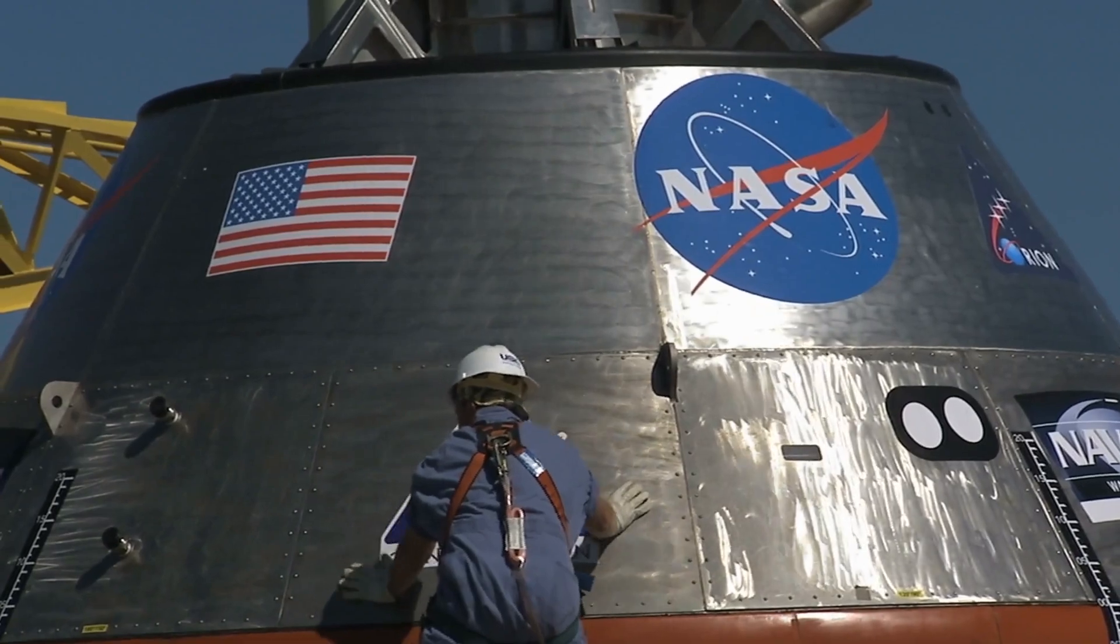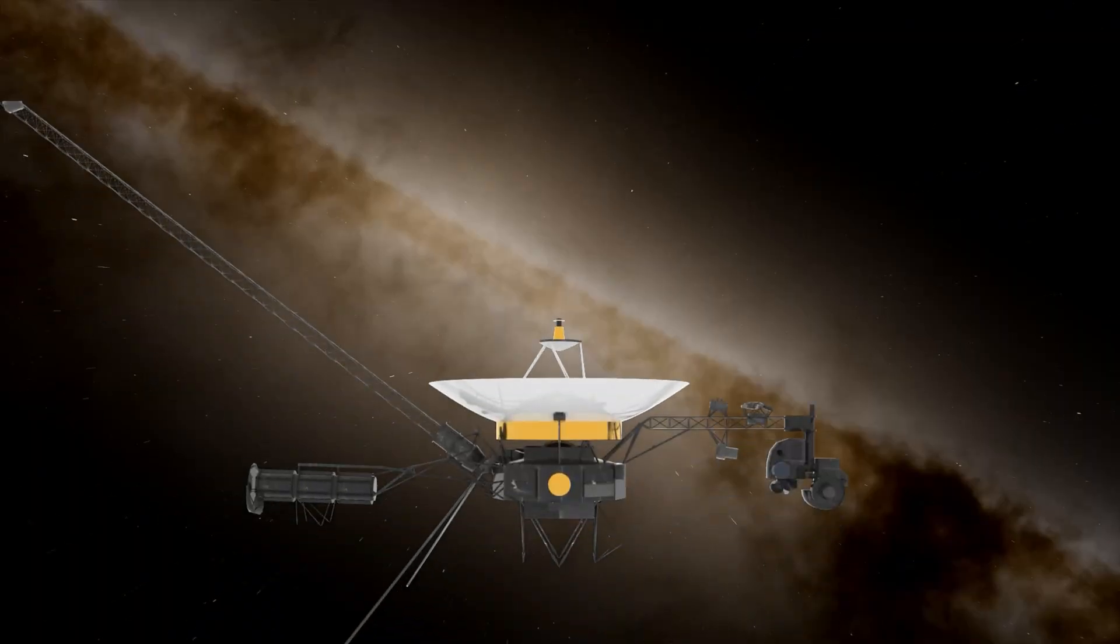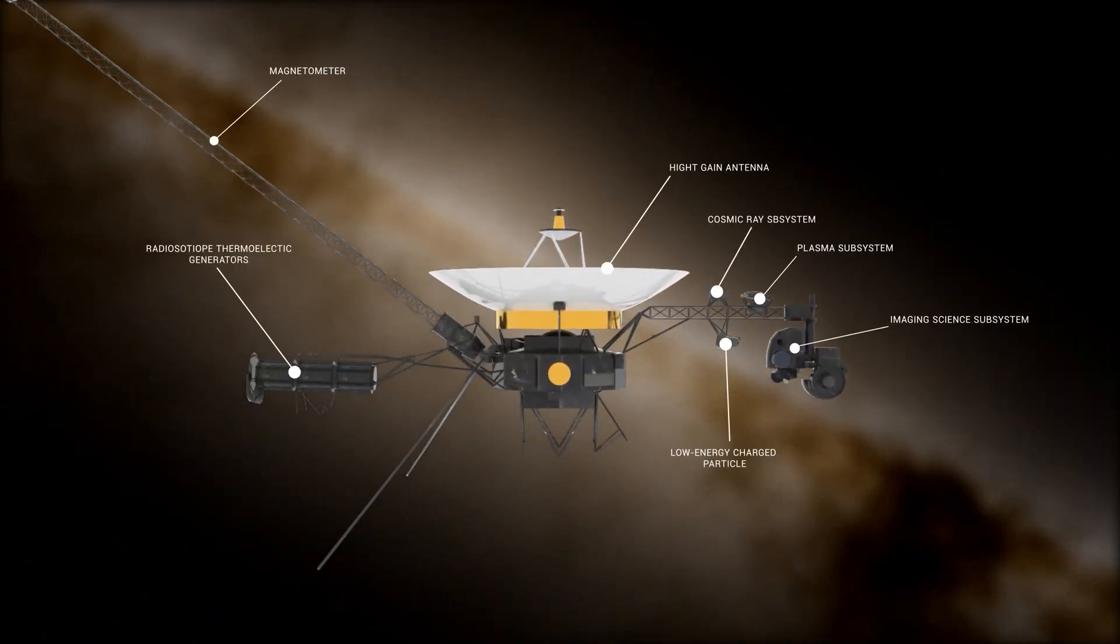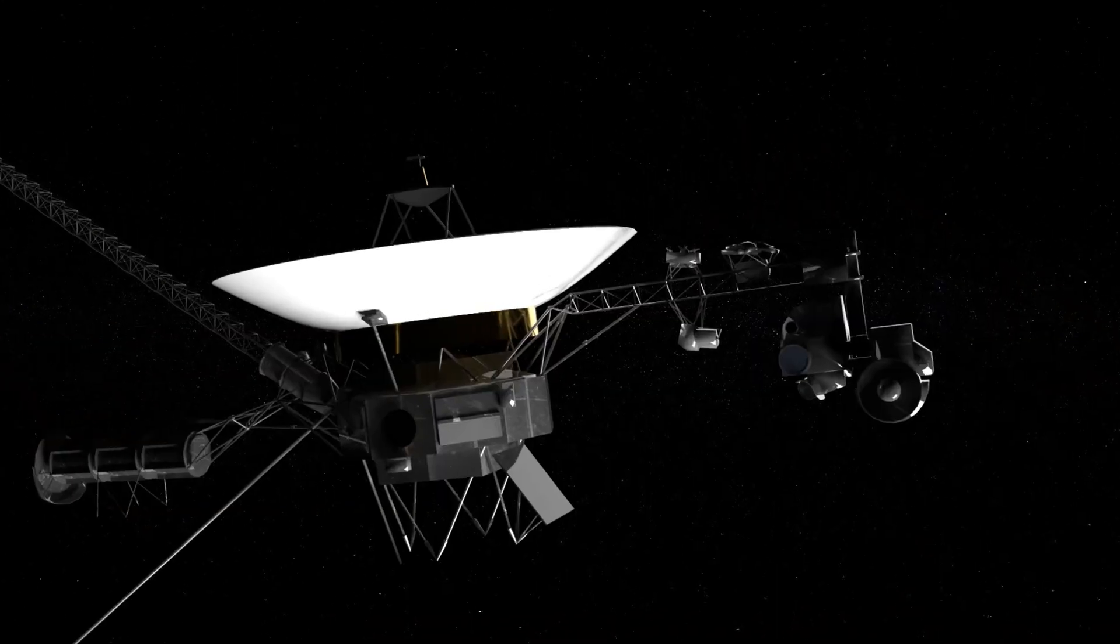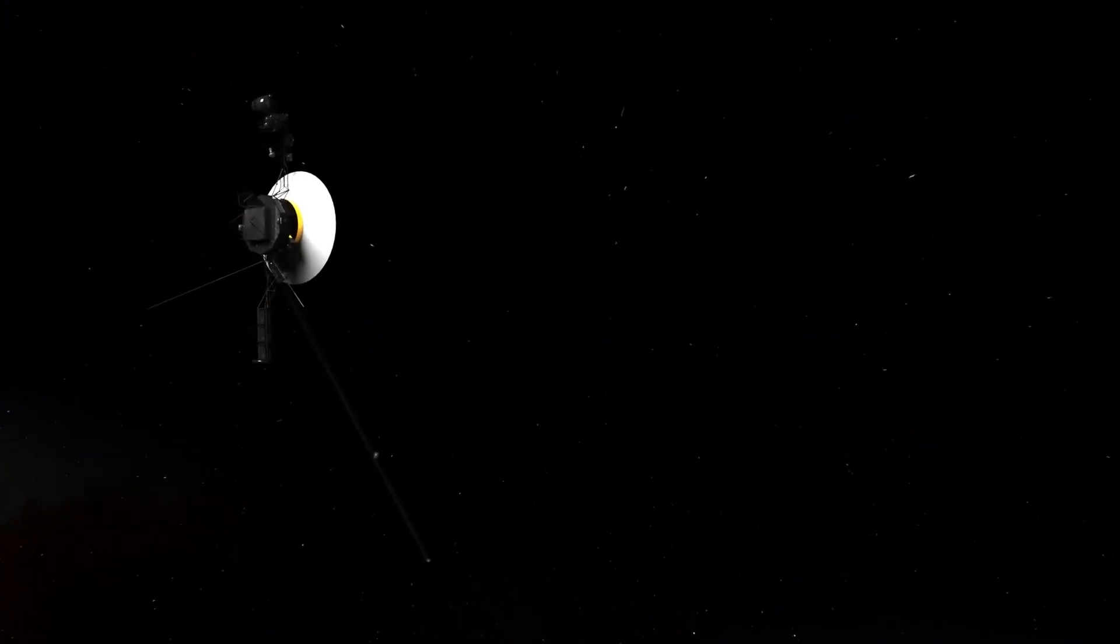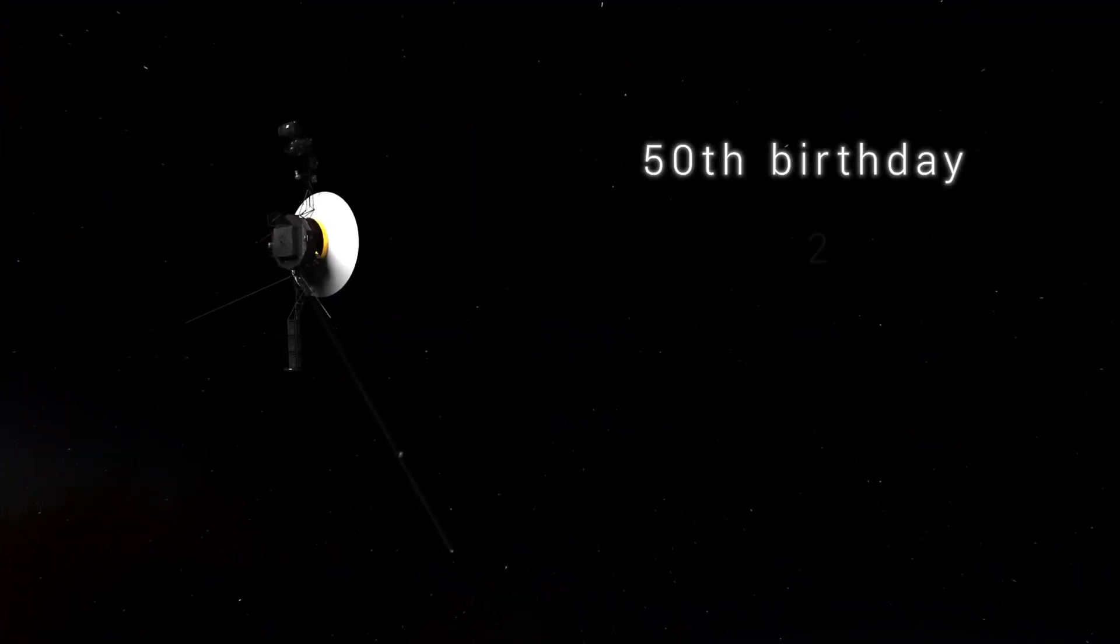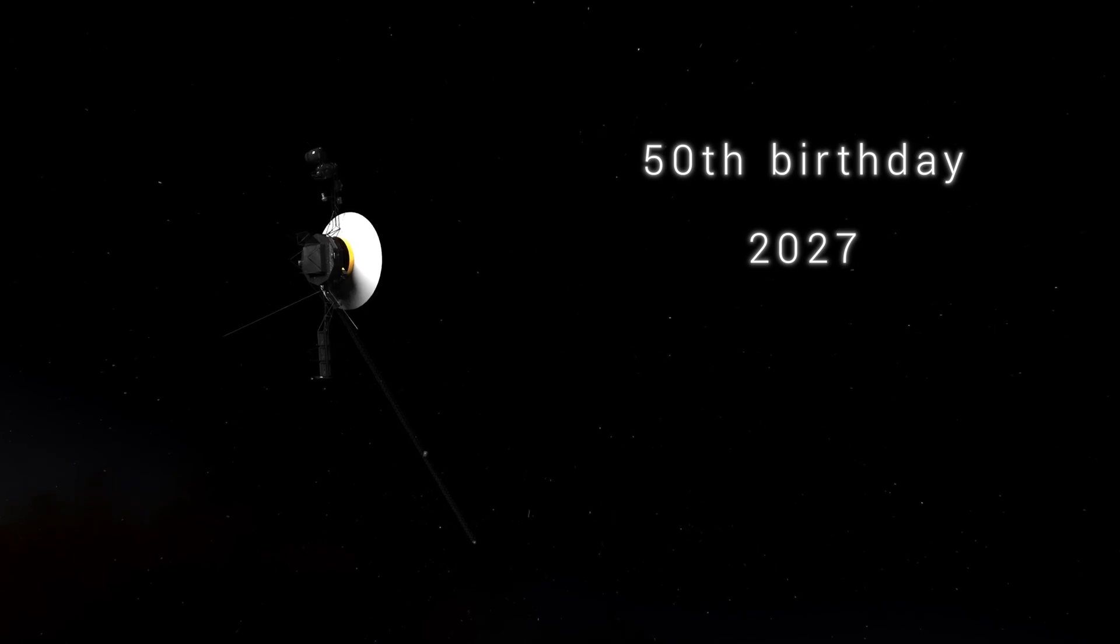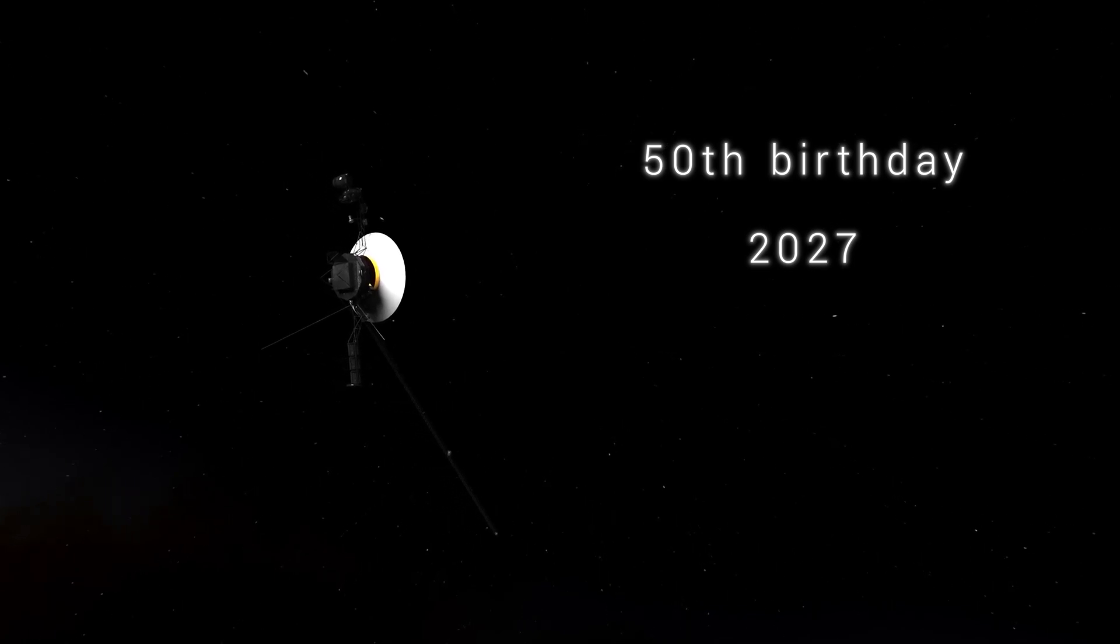NASA, who are in charge of the probes, disable any redundant systems to redirect the power and keep the Voyagers charged, allowing them to stay with us longer. For example, right now, the camera systems on both probes are off. The Voyagers are expected to celebrate their 50th birthday in 2027, still remaining in contact with Earth.